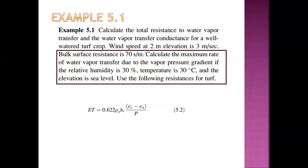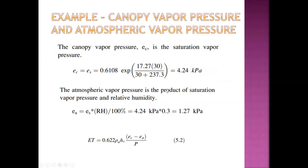Now calculating the maximum rate of water vapor transfer due to the vapor pressure gradient. The conditions are: relative humidity 30%, temperature 30°C, elevation at sea level. All terms in the equation will be filled in using these values.